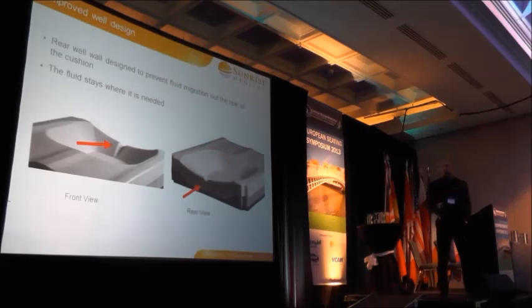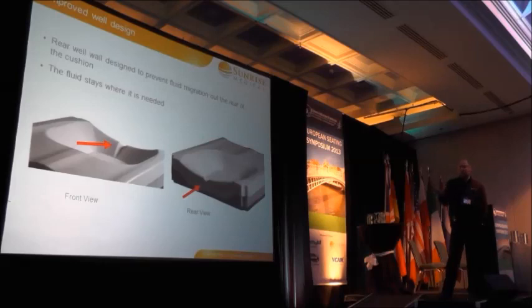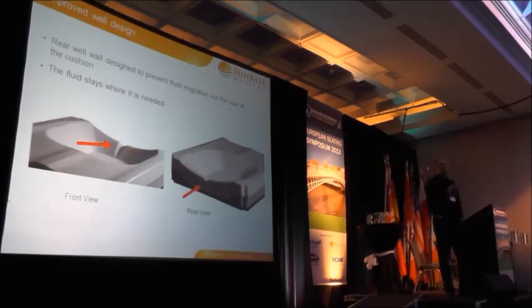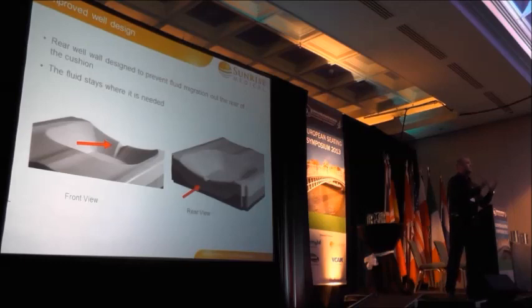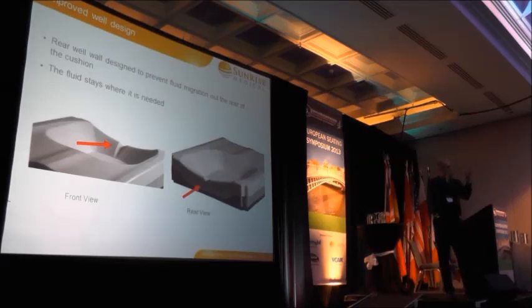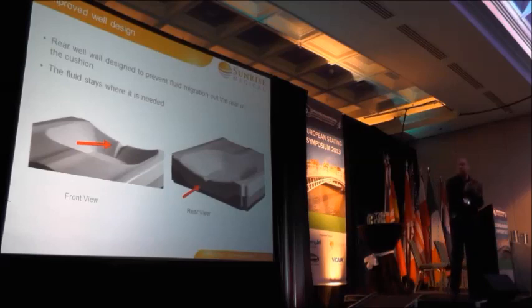When we look at the well design, you'll notice the difference between a J2, J3, and a J-Balance: we've now got the introduction of a real wall at the back of the well. This functions essentially to keep the fluid where you need it — underneath your ischial tuberosities and around the greater trochanters — offering that high skin protection that we were talking about.